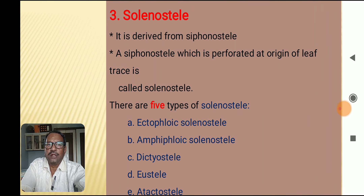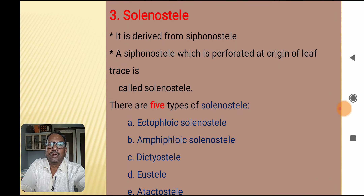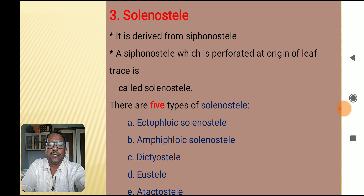The third major stele type is solenostele, derived from siphonostele. A siphonostele which is perforated at the leaf gap or leaf trace is called solenostele. There are five types of solenostele: ectofloic solenostele, amphifloic solenostele, dictyostele, eustele, and atactostele.